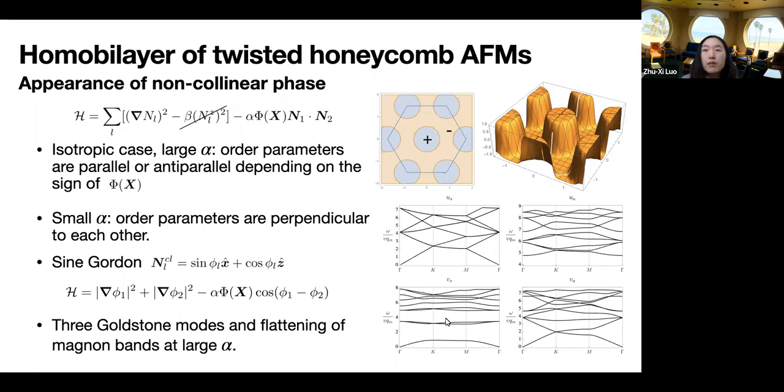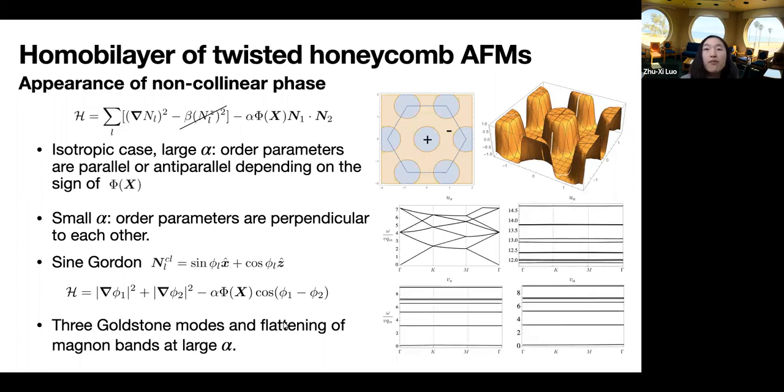Then the magnons can be computed about this saddle point solution, which exhibits three Goldstone modes. One of them corresponds to the rotation of phi 1 plus phi 2 in the plane. The other two correspond to the rotation of phis in the two layers out of the plane. So these three are basically the three generators of the O(3) group of the nonlinear sigma model. And interestingly, the magnon bands flatten at large alpha. So this is simply due to the fact that the moiré potential term becomes alternating deep wells and high walls confining the magnons to either of the two domains.